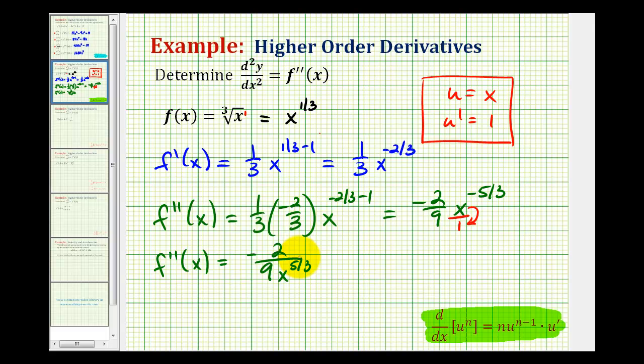But since the original function was given in radical form, let's go ahead and rewrite this back in radical form. So we'd have negative two over nine. Now this would be the cube root of x to the fifth. But this actually does simplify.